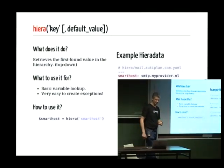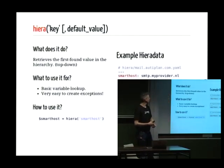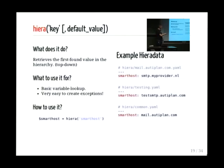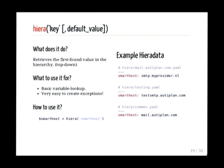A few functions related to Hiera: the regular 'hiera' call takes the key as the first parameter and you can also specify a default value, so if the key cannot be found it returns that value instead of an error. This hierarchy lookup is very convenient — for instance, looking up 'smarthost': for most machines it loads common.yaml and provides your company's smarthost. For machines in the testing environment, you might send all mail to a different mail server to prevent mailboxes from filling up. And for a specific machine, the FQDN YAML sends it to the provider.